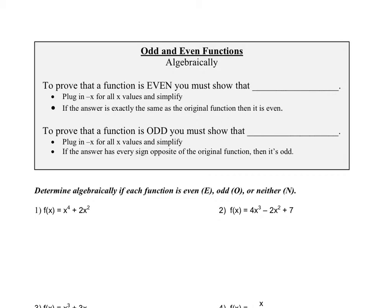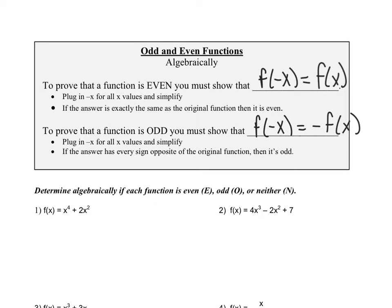Now I want to talk about odd and even functions algebraically. To prove that a function is even, you must show that f of negative x is equal to f of x. To prove that a function is odd, you must show that f of negative x is equal to negative f of x. In other words, to prove a function is even, you're going to plug in negative x for all x values and simplify. If the answer is exactly the same as the original function, then it's even. To prove something is odd, plug in negative x again, and if every sign is opposite, then it's odd.